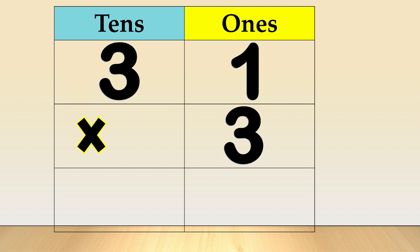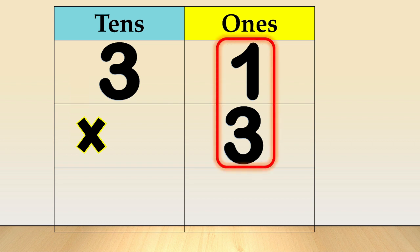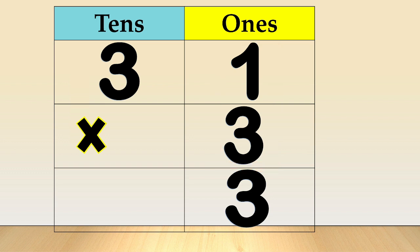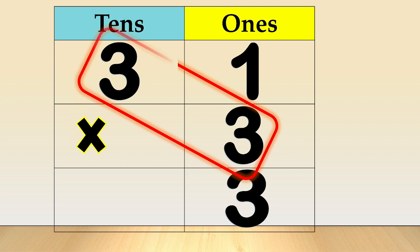Next, multiply the digit in the ones place with the multiplier 3. So, 1 times 3 is equal to 3 ones. Then, multiply the digit in the tens place with the multiplier 3. So, 3 times 3 is equal to 9 tens.